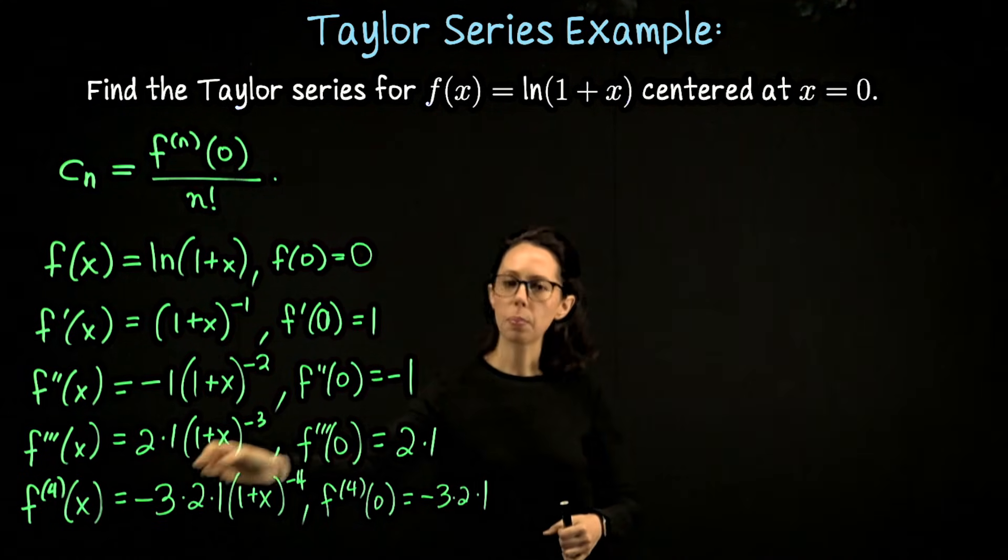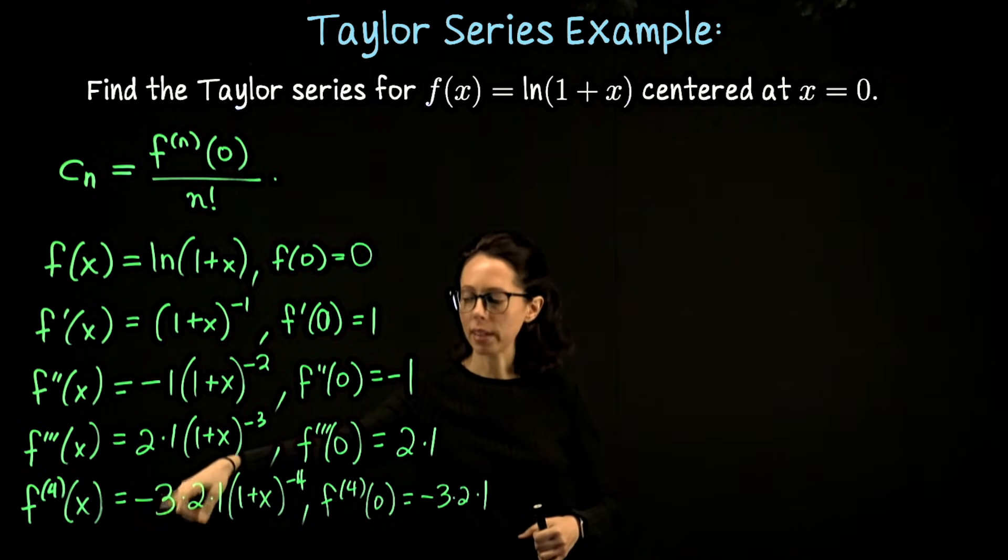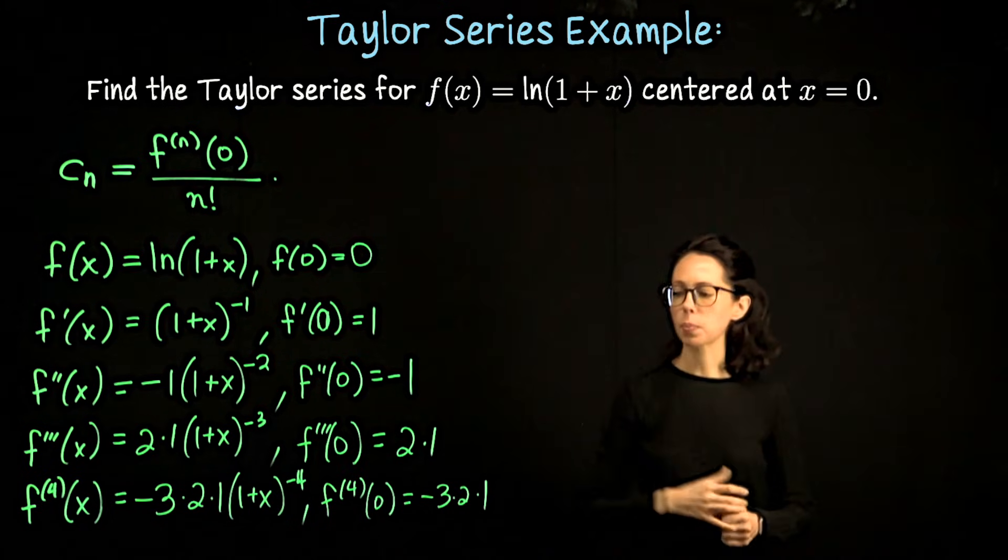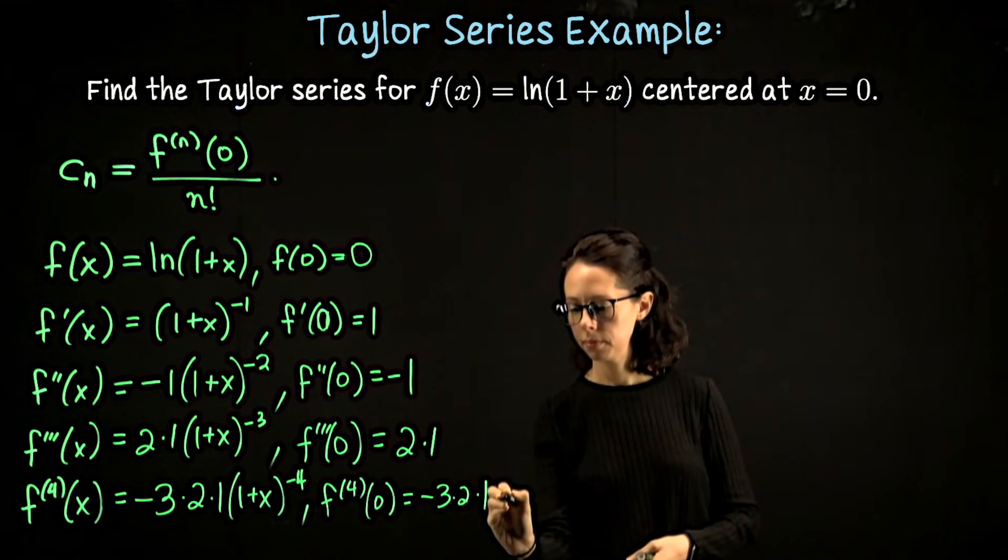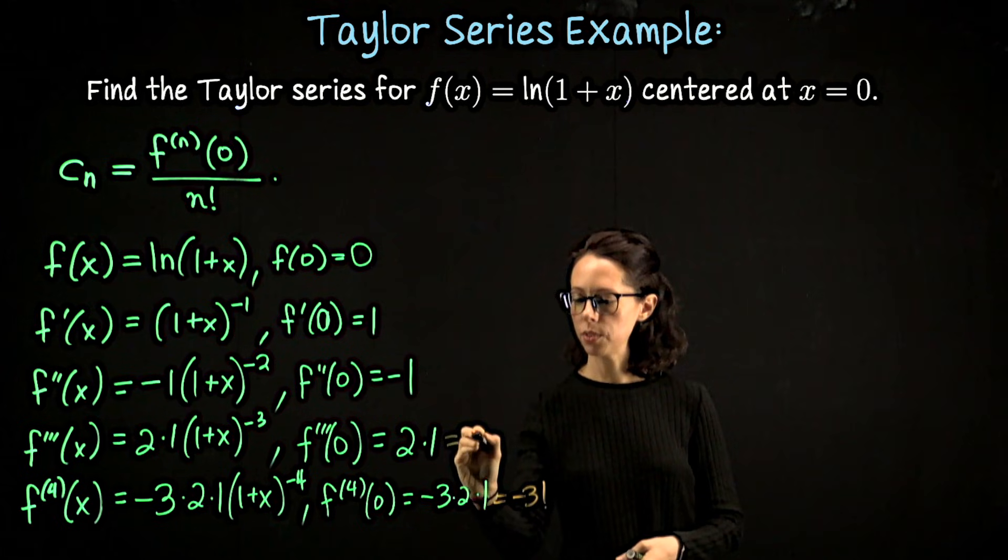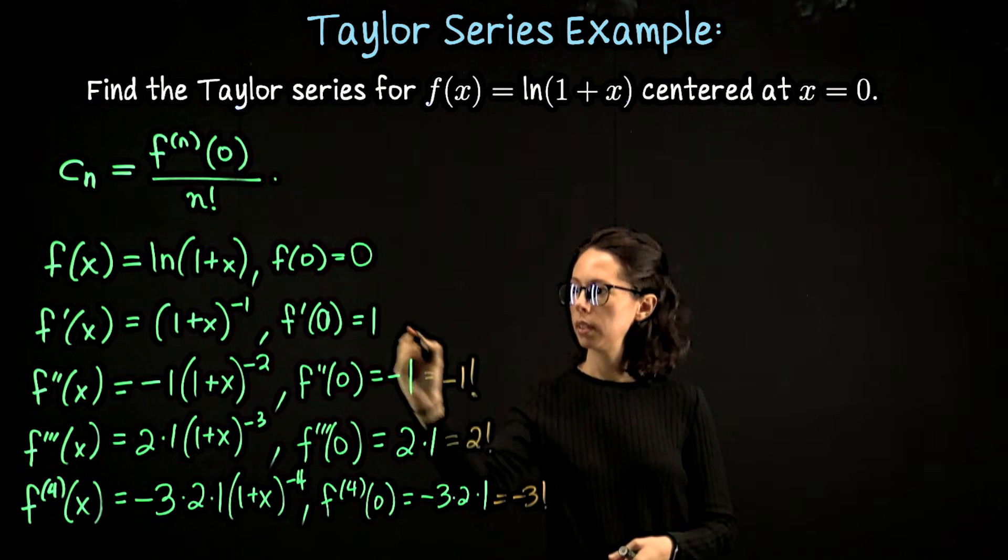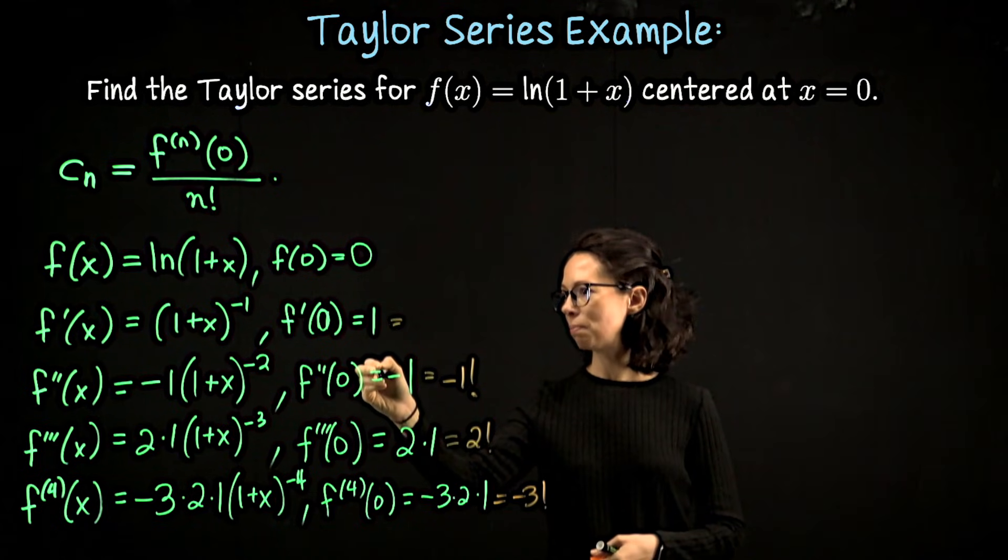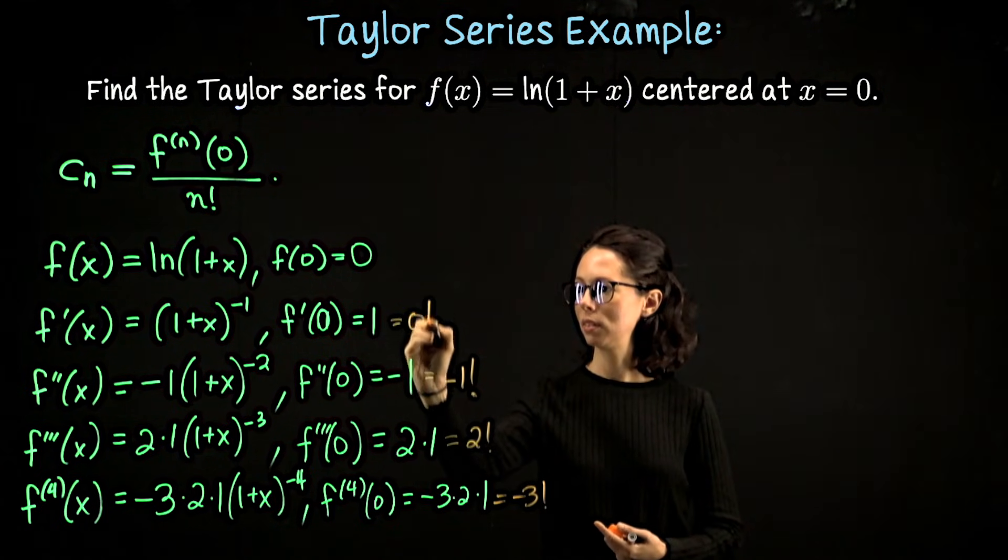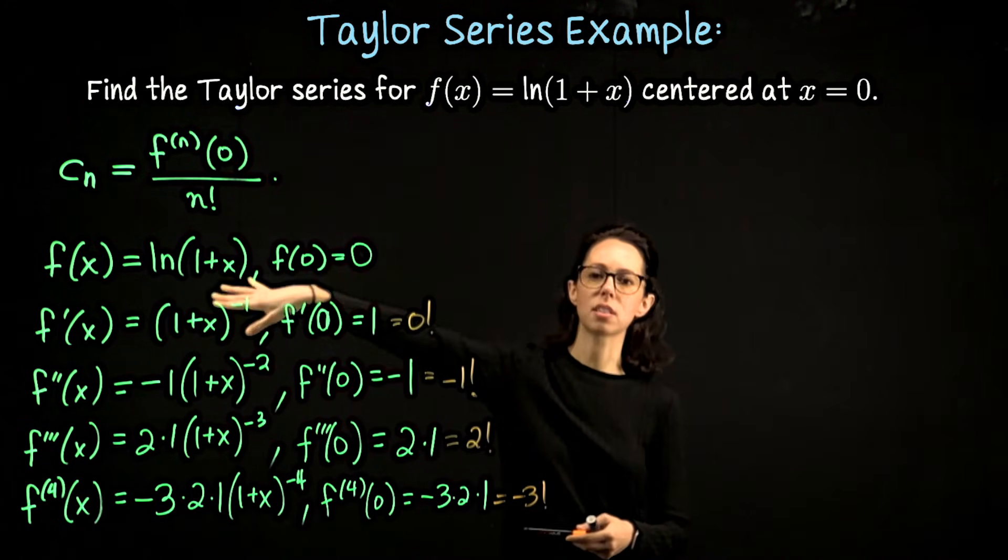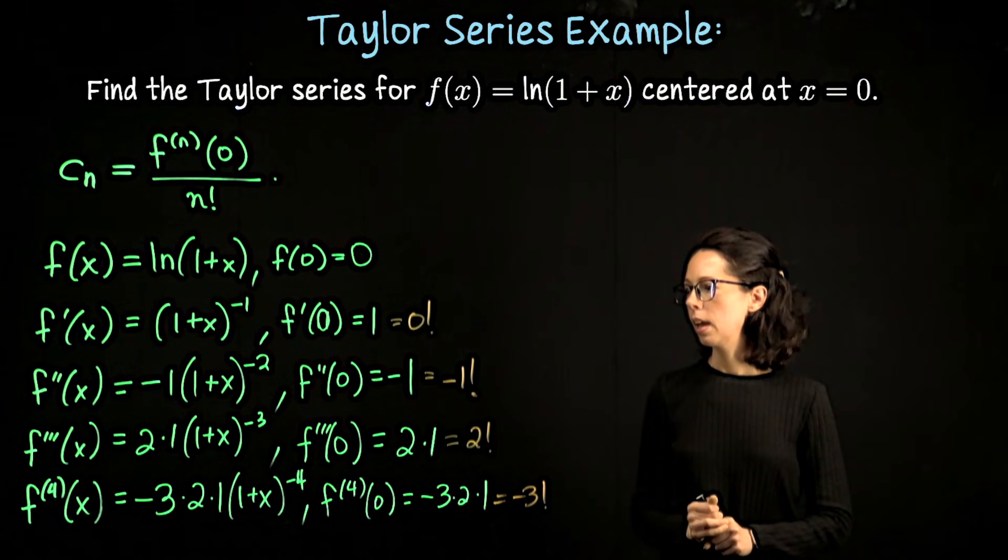What's happening here is every time we pull down a power to get to the next derivative, we pick up another factor in front that goes up by 1. So this is a factorial expression. In particular, this is negative 3 factorial. This is positive 2 factorial. This we can make as negative 1 factorial. This is also 1 factorial; we call it 0 factorial. And then this term, we'll just get rid of that.